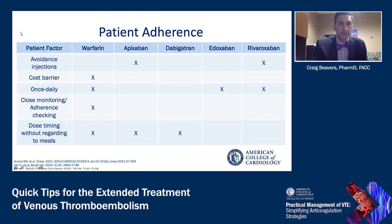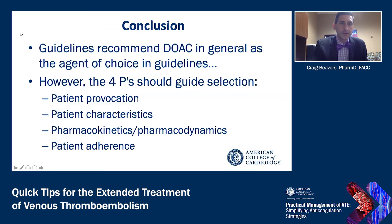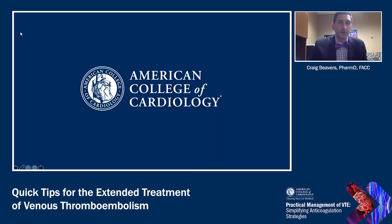In conclusion, guidelines recommend DOACs as the general agent of choice. However, the four P's should guide selection: patient provocation — what is provoking the DVT; patient characteristics; pharmacokinetics and pharmacodynamics; and patient adherence. Thank you.